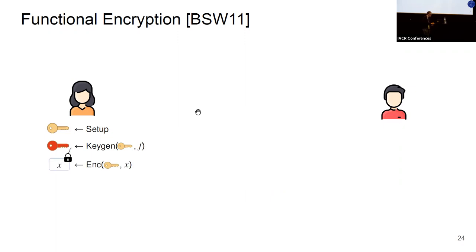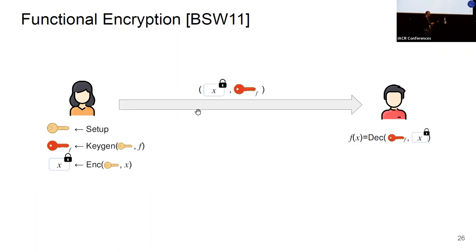Alice also generates a ciphertext encrypting x, then sends the ciphertext together with the functional key to Bob. Bob can use the functional key in the decryption procedure to learn the function associated with the key applied on the underlying message. Security ensures that nothing more about the underlying plaintext is leaked than what is revealed by the function evaluation.